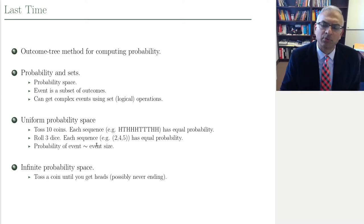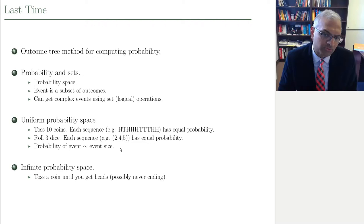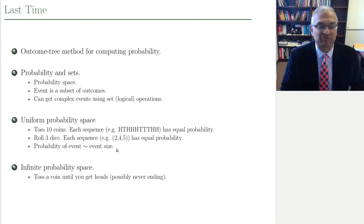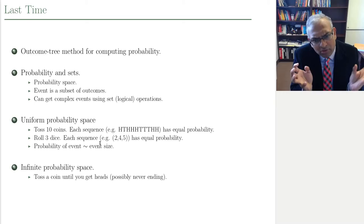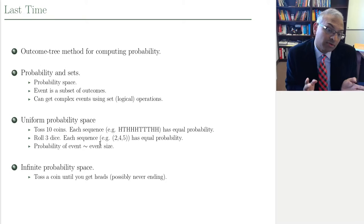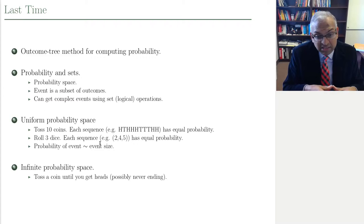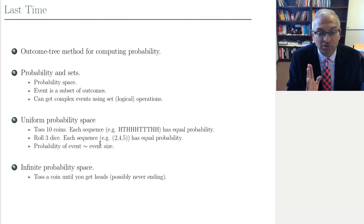Another example: you roll three dice. Each sequence for the three dice — for example, rolling a 2, then a 4, then a 5 — has equal probability. You could ask: what are the chances that you roll at least two 5s? The uniform probability space is very convenient because the probability of an event is basically related to the number of outcomes in the event. So computing probability in uniform spaces amounts to counting, and we already studied counting. The tools of counting are very useful for discrete probability, which is what we're focusing on.